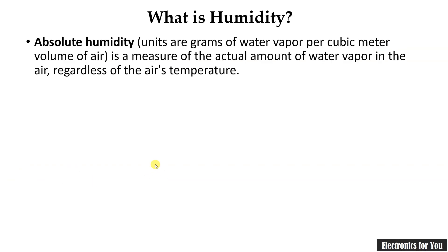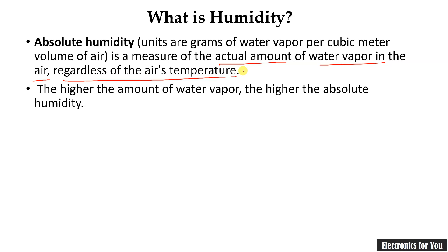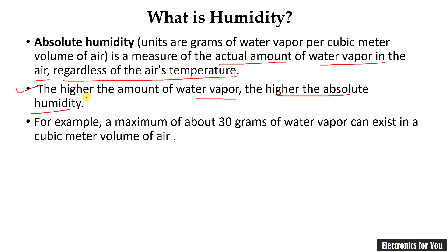Let's start with absolute humidity first. Absolute humidity is the actual amount of water vapor in the air regardless of air temperature. Its unit is grams per meter cube. The higher the amount of water vapor, the higher the absolute humidity, because it is simply the weight of the water vapor. For example, if air contains 30 grams of water vapor per meter cube, then its absolute humidity is 30 grams per meter cube. It is the maximum amount of water vapor that can exist in a one meter cube volume of air.